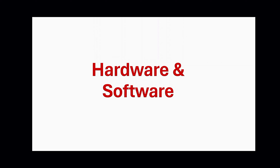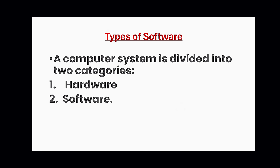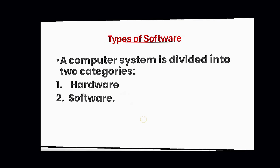Assalamualaikum warahmatullahi wabarakatuh. We will discuss hardware and software — how they work in relationship and comparison. A computer system is divided into two categories: the first one is hardware and the second one is software.